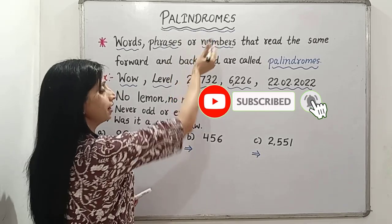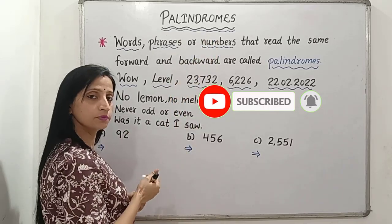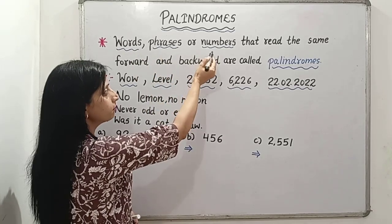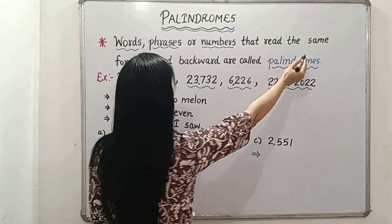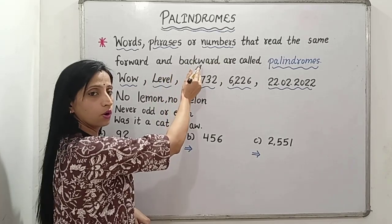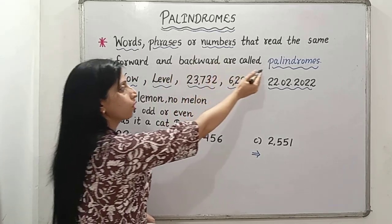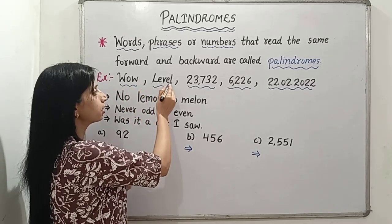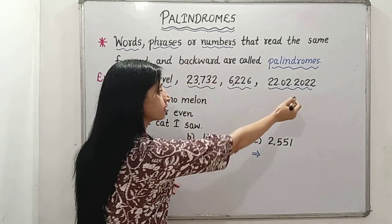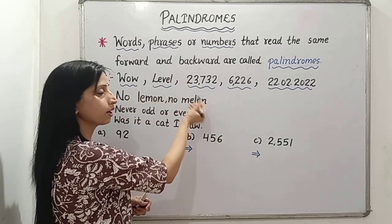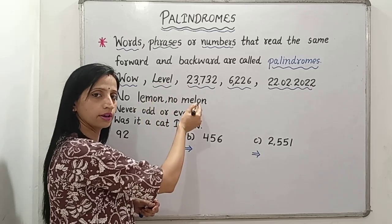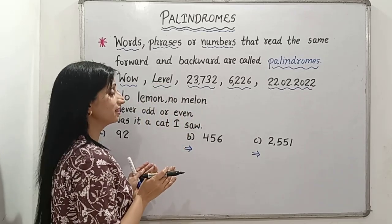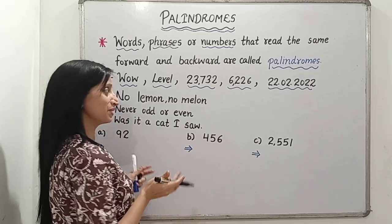What are palindromes? Palindromes means the words, phrases, or numbers that read the same forward and backward are called palindromes. When we read those words, those numbers, those phrases from backward and from forward, it will be the same. Isn't it interesting? So let's begin.